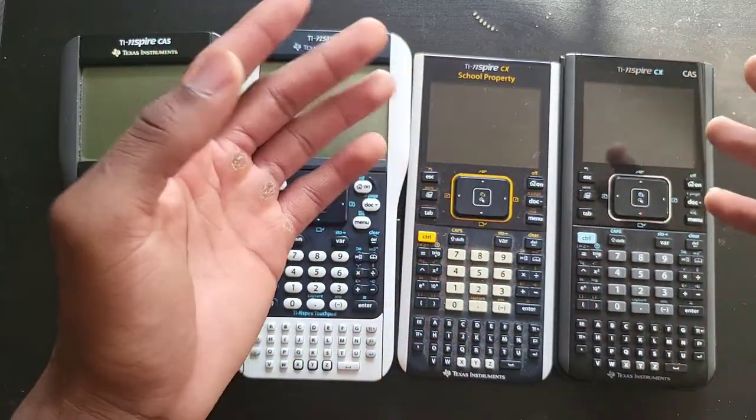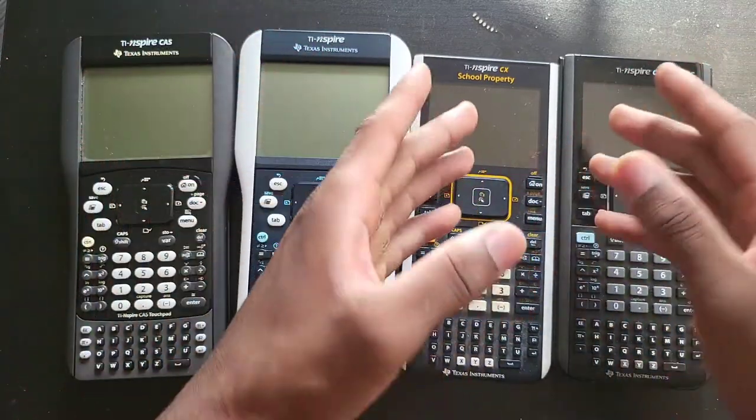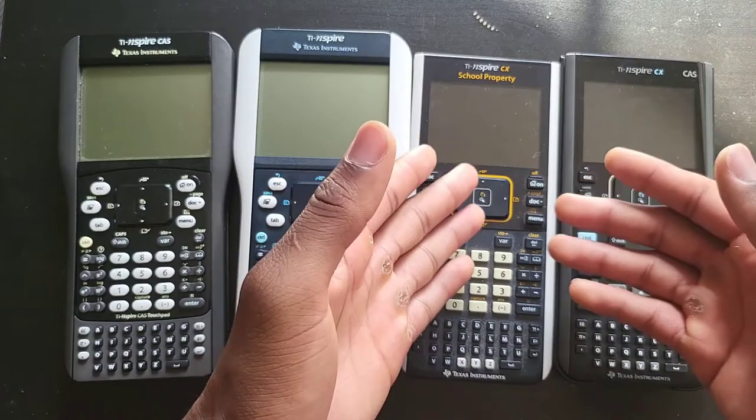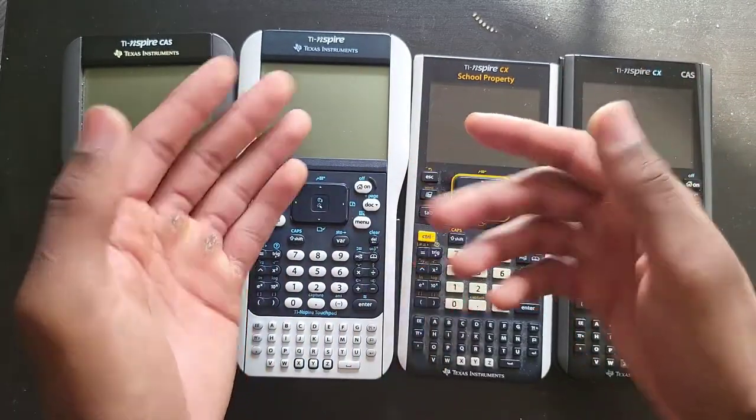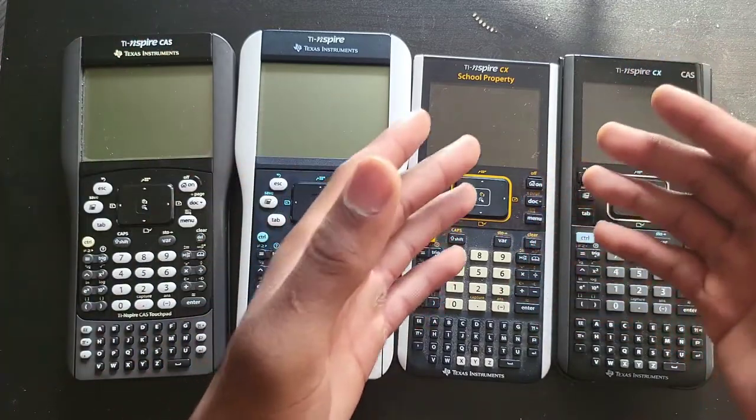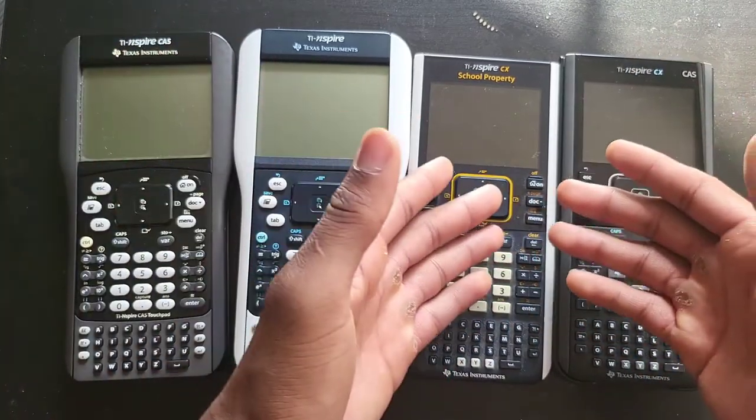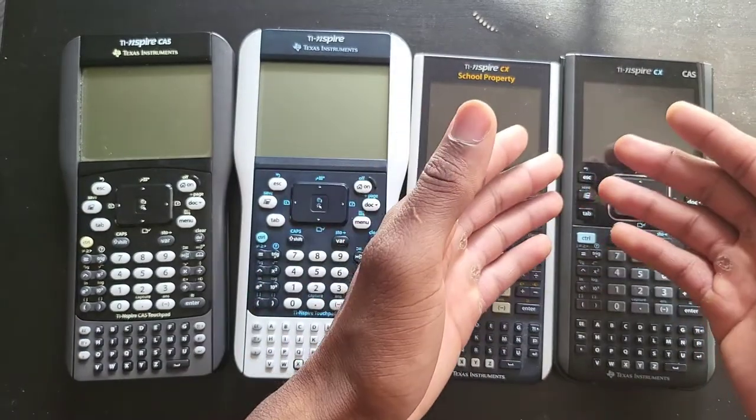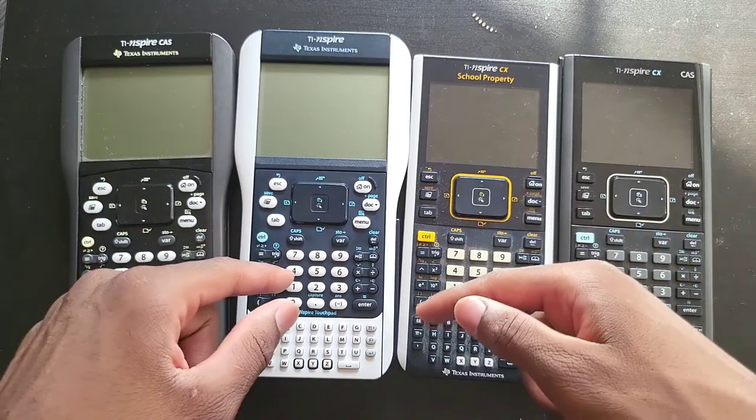With one year apart in the calculator world, that's really nothing, especially when it comes to the software. The software on these two are pretty much identical. The only difference between the two is different design and color display here, non-color here. The design is much slimmer here as you can see, but don't get fooled by the color screen. They can essentially do the same exact things, even the keyboard placement is the same.